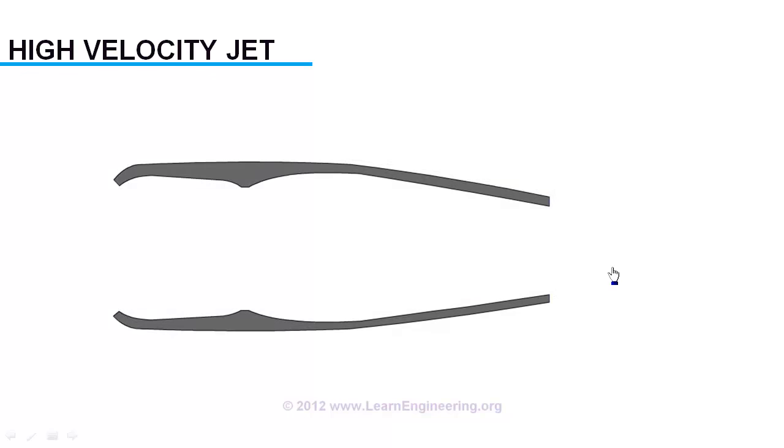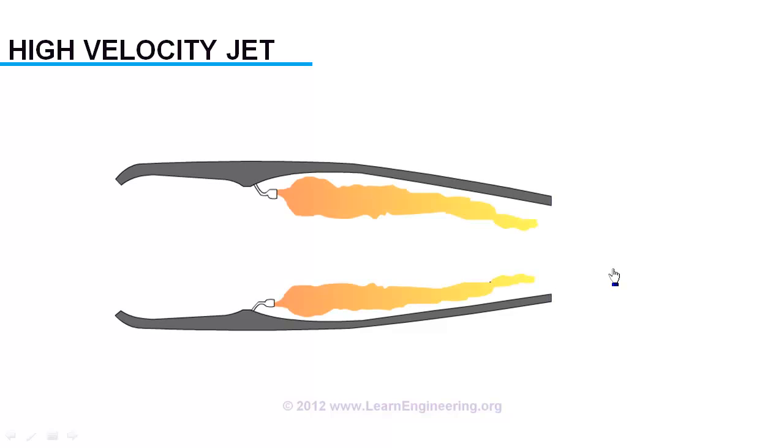We will produce it by a combustion process, by injecting fuel into it, which will produce flames with very high velocity. But for a sustainable combustion process, we need the inlet air to the combustion chamber to be at high temperature and pressure.